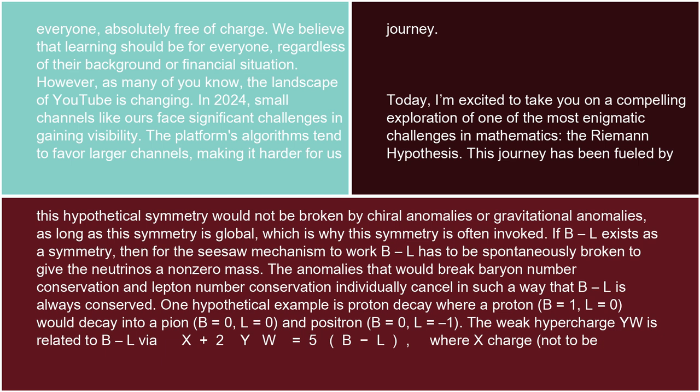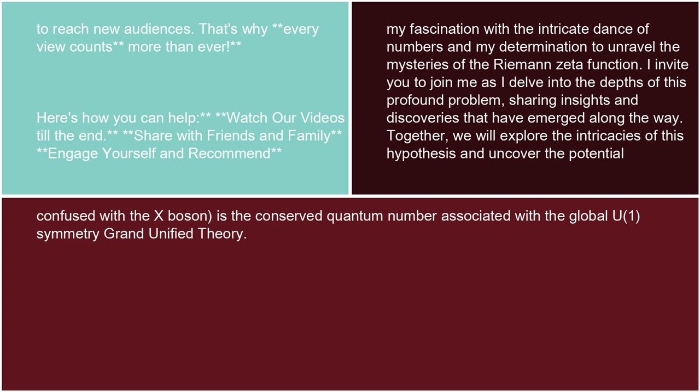The weak hypercharge YW is related to B-L via X + 2YW = 5(B-L), where X charge — not to be confused with the X boson — is the conserved quantum number associated with the global U(1) symmetry in grand unified theory.